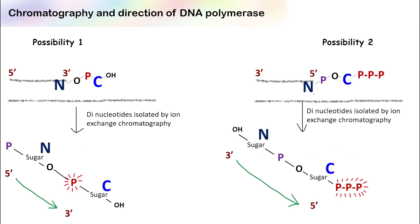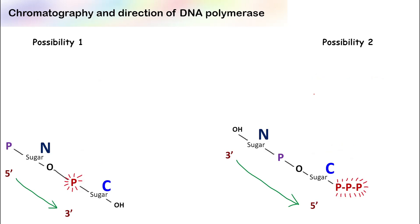So in the next step, he used an enzyme which cuts this particular bond—the bond between sugar and the phosphate. Now if you see this carefully, if the direction was from five prime to three prime, then the labeled phosphate is getting transferred to the adjacent nucleotide. The labeled phosphate is no more with cytosine.